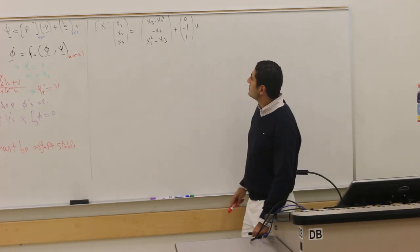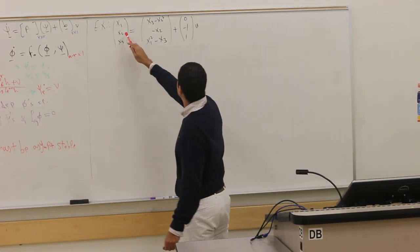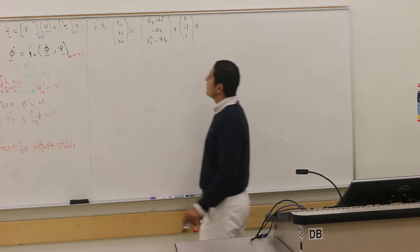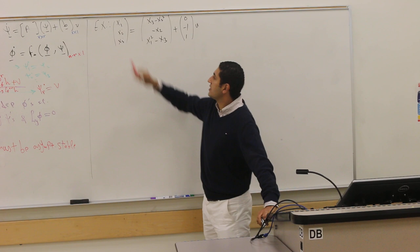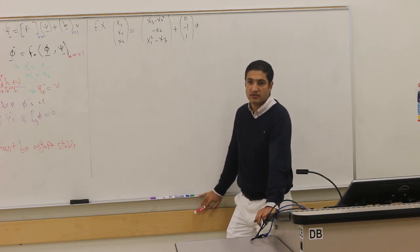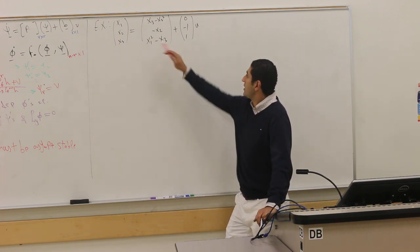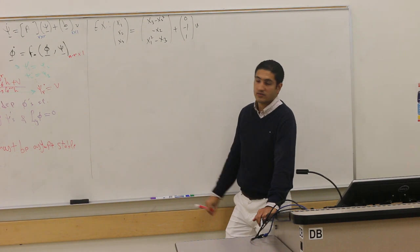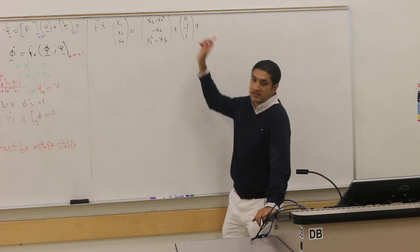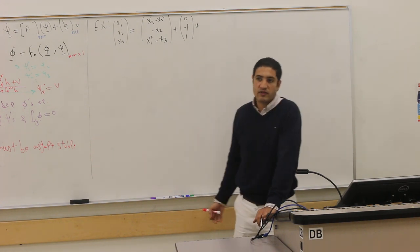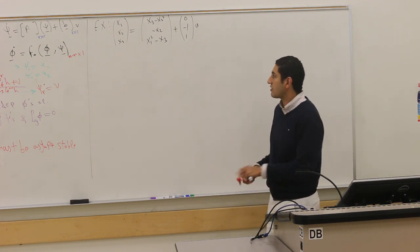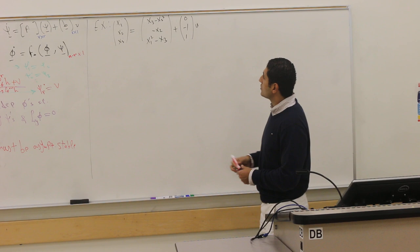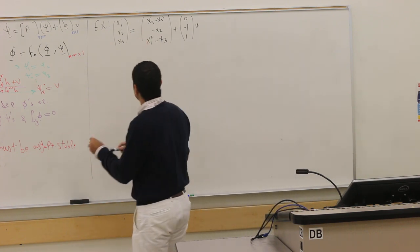If I define x₂ as the output, what would be the relative degree? Just one, because the input directly appears. What about x₃? It's the same. We don't want the relative degree to be smaller because you will have two other states that are unobservable.